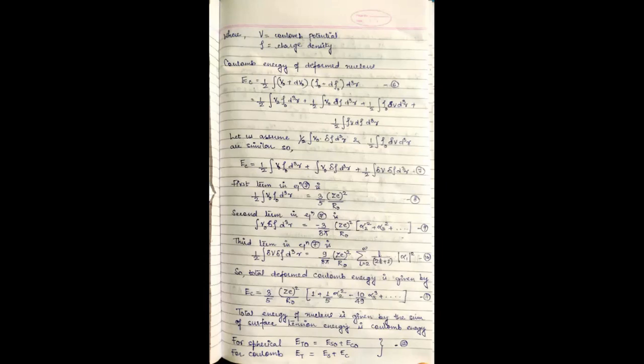The third term in equation 7 is 1 by 2 integral del V naught del rho d cube R equals 9 by 8 pi Z e square upon R naught times summation L equals 2 to infinity L upon 2 L plus 1 mod of alpha L whole square.